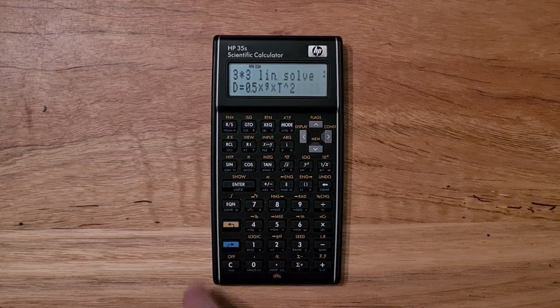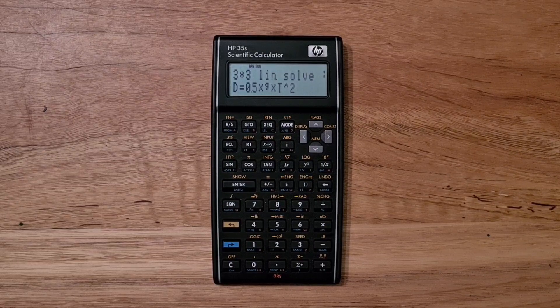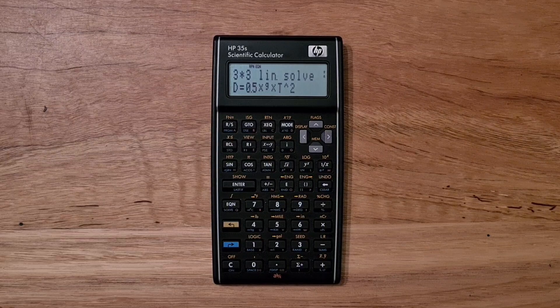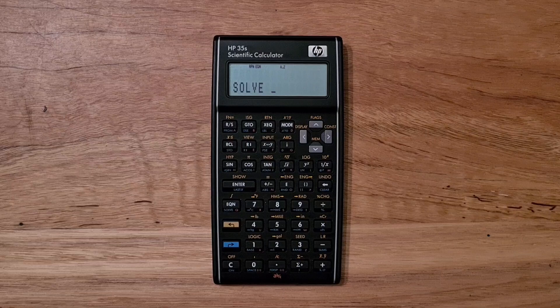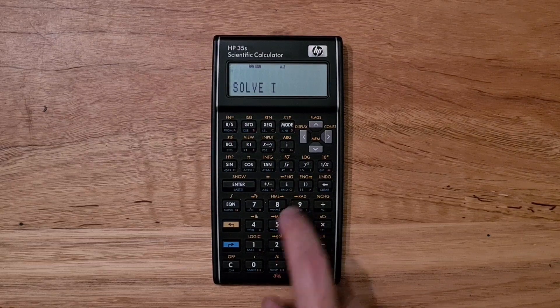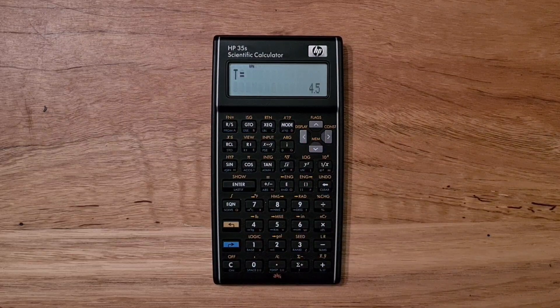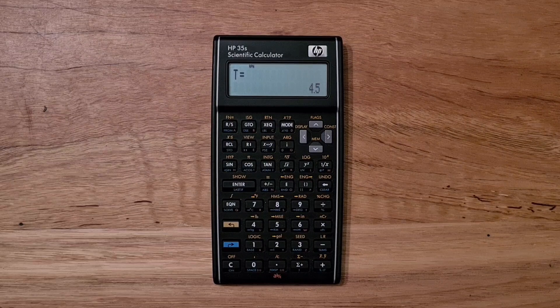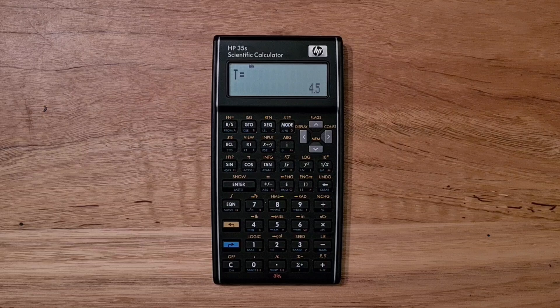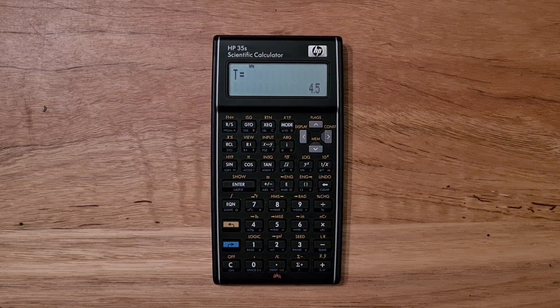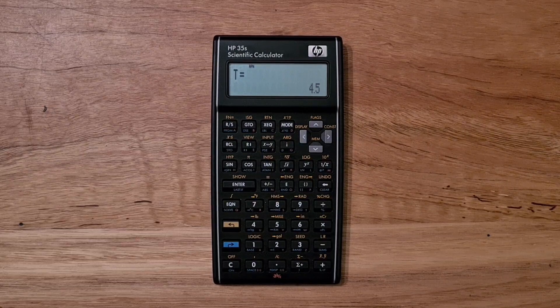I can also solve for a variable. If I want to know the time that it takes for an object to fall 100 meters, I can hit solve and enter T, and so the distance is 100. It would take 4.5 seconds for an object to fall that far. The equation solver is a really great feature, but it is somewhat limited by its support for only single letter variables.